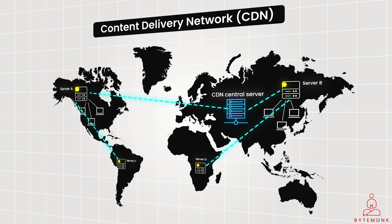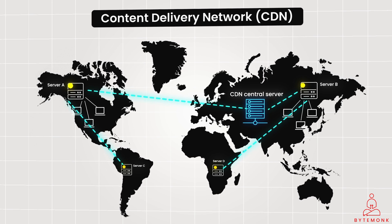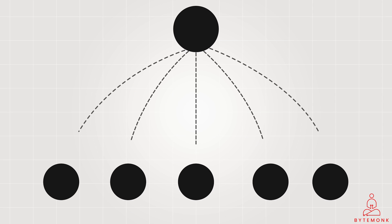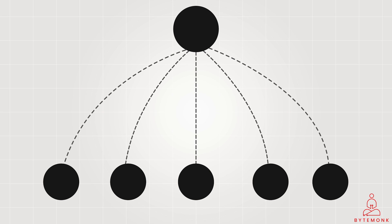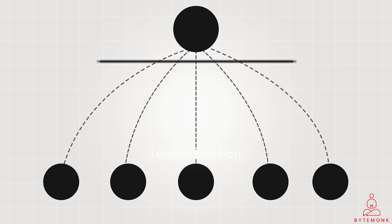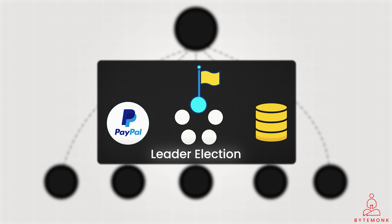In a hierarchical system, leader-based heartbeats are used, where a designated leader collects and analyzes heartbeat data from all servers, offering a centralized view of system health. Heartbeat forms the foundation of the leader election process in distributed systems — understanding how nodes reach consensus on a leader is crucial for system design.